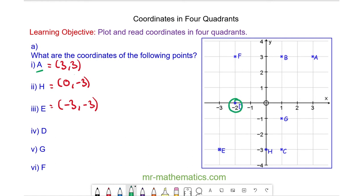Point D is at the coordinate when x equals negative two and y equals zero. Point G is when x equals one and y equals negative one. And point F is when x equals negative two and y equals three.